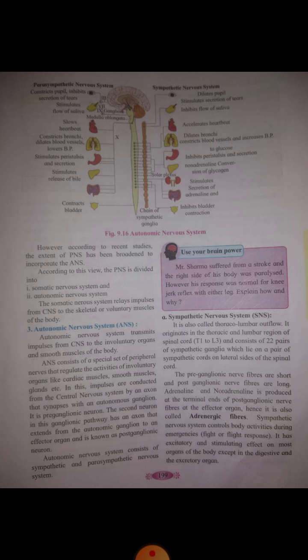So there are three types of nervous system: central nervous system, peripheral nervous system, and the autonomic nervous system.